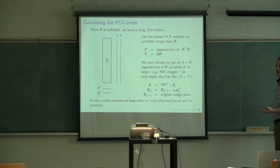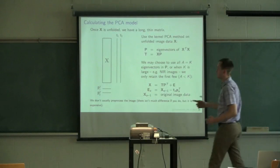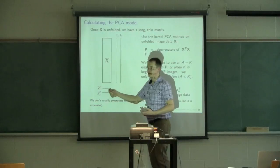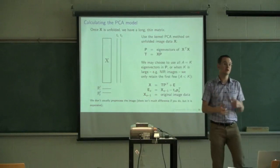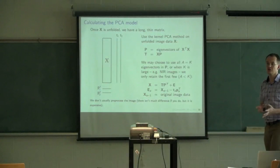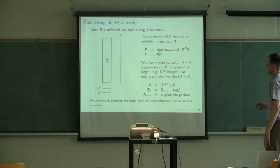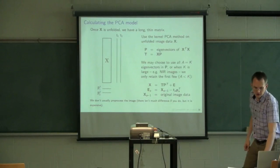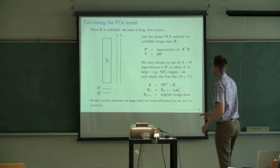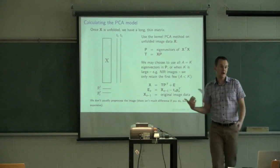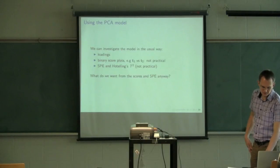From this point onwards we treat the result as a normal PCA: we have scores T and loadings P, and can look at plots of T1 versus T2, P1 versus P2, calculate the SPE (squared prediction error), and Hotelling's T-squared. Any of the usual PCA mechanisms apply — the X matrix just comes from image data. We can also calculate the residual matrix to visualize what's left unexplained after one or two components.